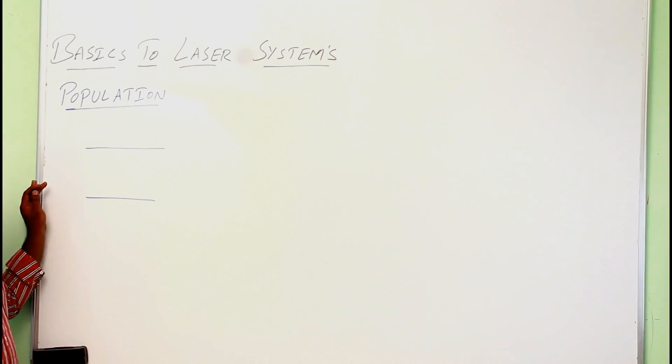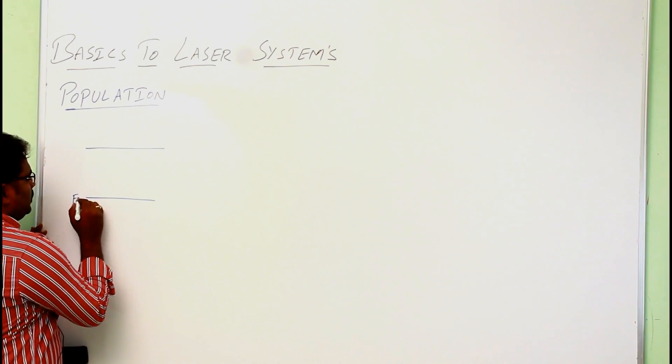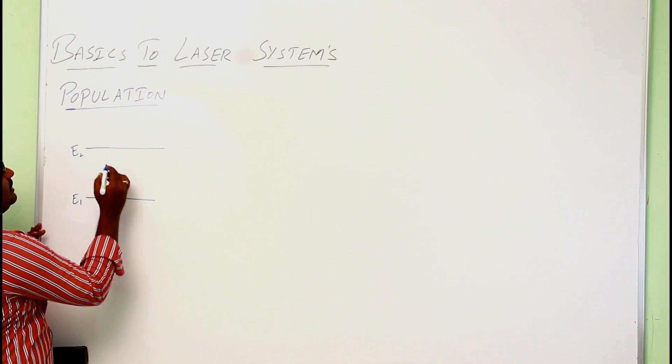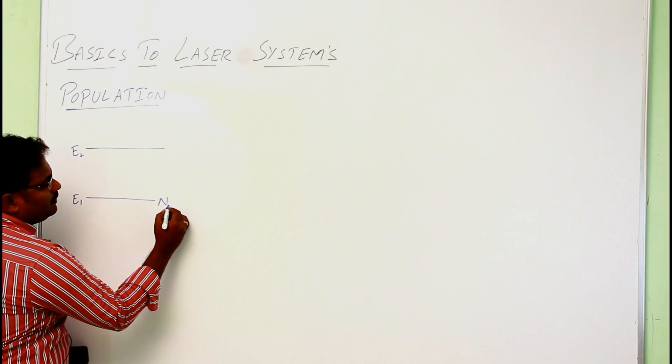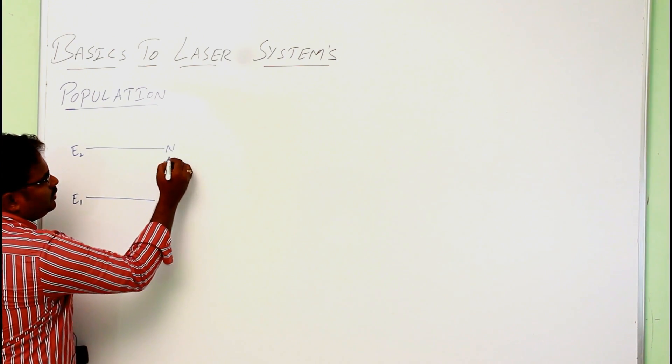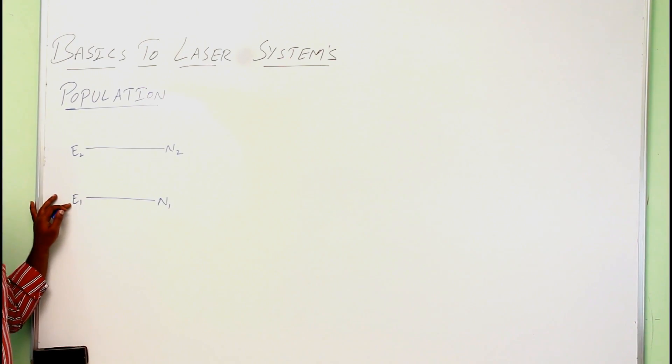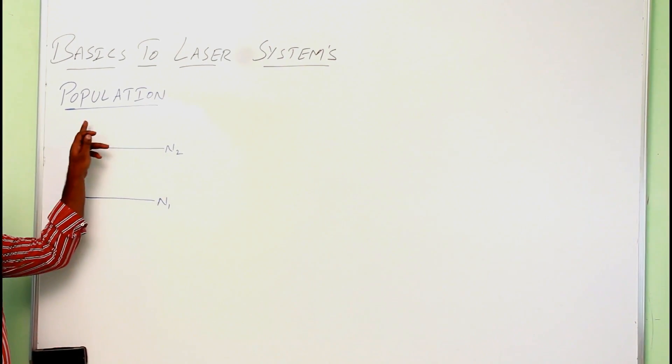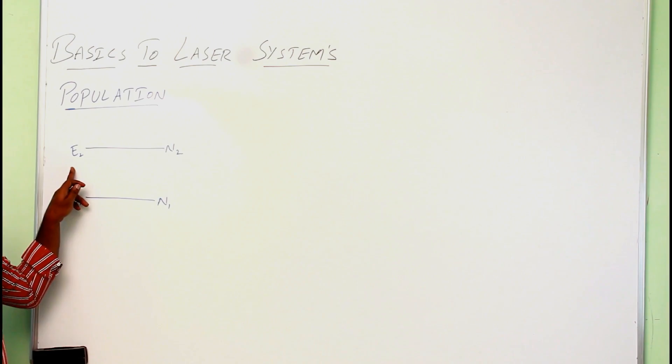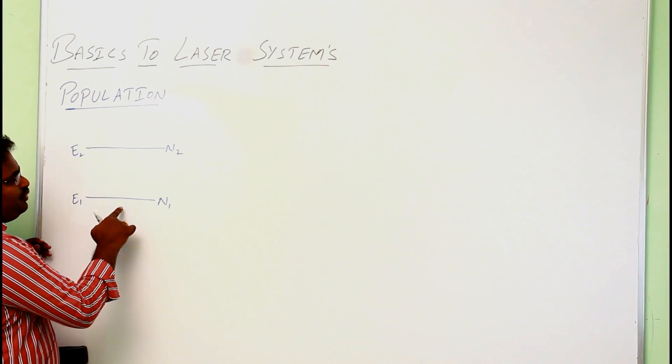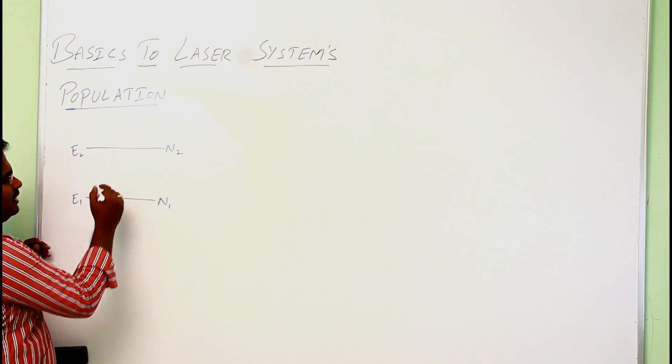Let us say there are two energy levels E1 and E2 having number of atoms N1 and N2. So this N1 is known as the population of energy level E1, N2 is known as the population of energy level E2. So one can calculate the number of atoms present in any level with the help of Boltzmann distribution law.